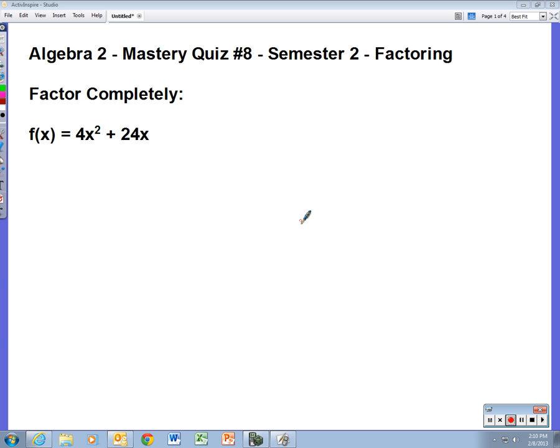Algebra two mastery quiz number eight, factoring. Remember when factoring completely, the very first thing you should look for is the GCF, the greatest common factor. So we have two terms here. Let's see if they have anything in common.